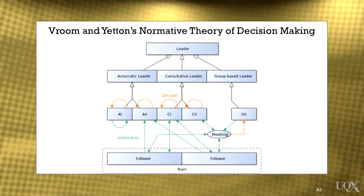Vroom-Yetton took yet another contingency into account — leader decision-making processes. Their work consisted of advising leaders about which kinds of decision-making behaviours would more likely result in acceptable or high-quality outcomes based upon particular situations. The appeal of Vroom-Yetton's model was obvious for managers because it provided a formula for leader effectiveness that was independent of the leader's traits and their degree of power and influence.